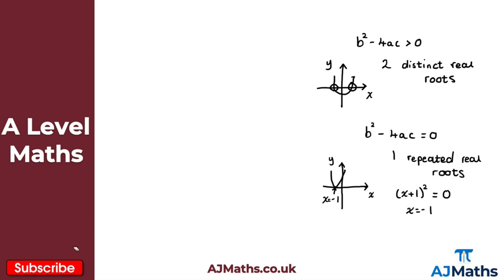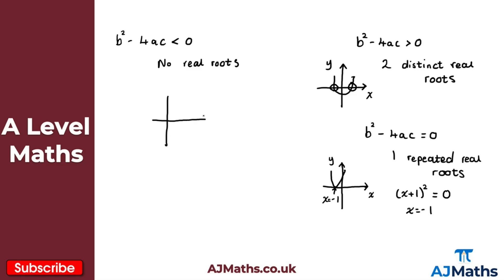The final case is when b squared minus 4ac is less than zero. In this case we have no real roots. Graphically, the parabola does not cut through the x-axis at all.